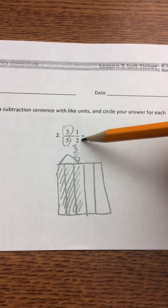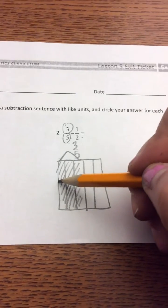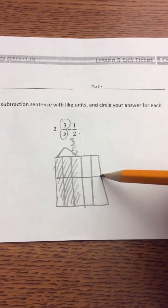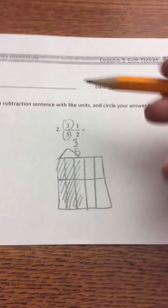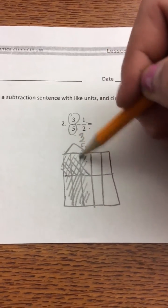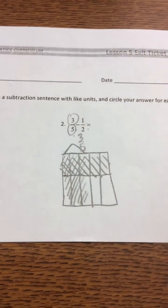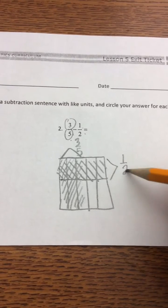Our second fraction is 1/2. The denominator of 2 tells us to break our area model into 2 pieces, and our numerator tells us to shade 1. Once we've done that, we have to remember to bracket and label.